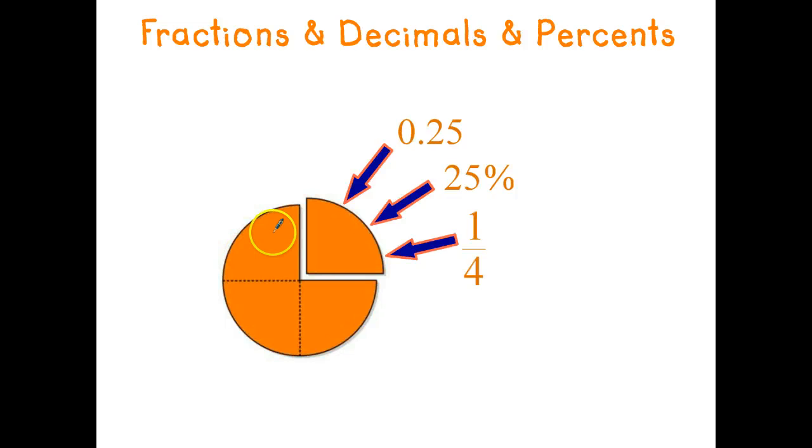Hello students. Now have a quick look at this circle just here. As you can see from the whole circle we've cut out a portion of it. Now that part of the circle that we've cut out can be represented three different ways. We can say that we've taken away a quarter of the circle, we can say that we've taken out 25% of the circle, or we can say that is equal to 0.25 of the circle.